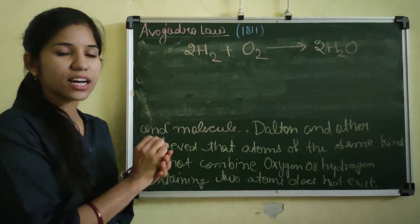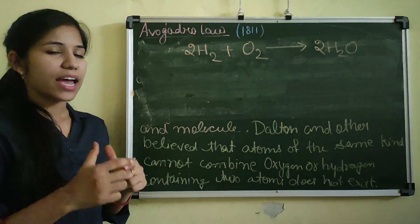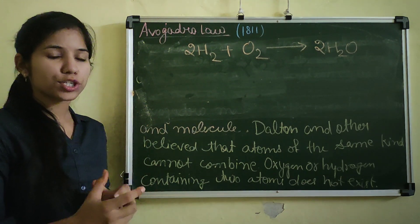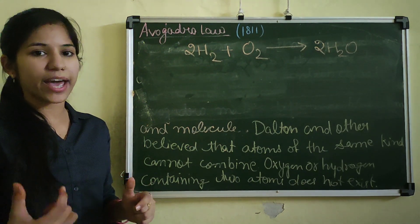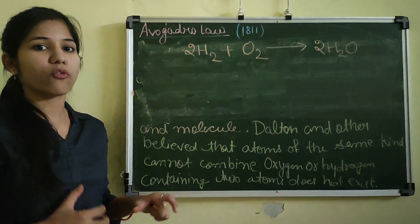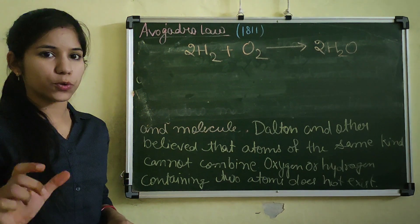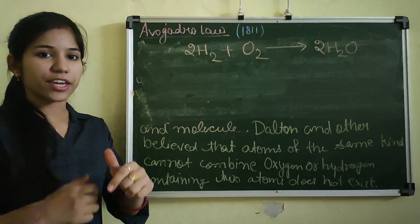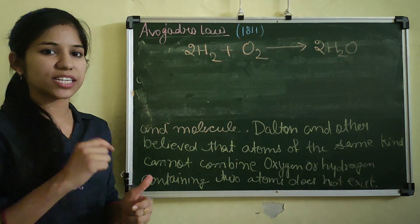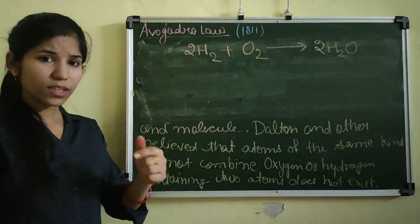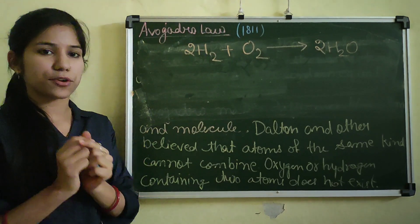Dalton and others believed that atoms of the same kind cannot combine, so hydrogen and oxygen as diatomic molecules could not exist. Avogadro's article was published in the Journal de Physique and did not receive much support at that time. But after 50 years, in 1860, the importance of Avogadro's work was recognised.